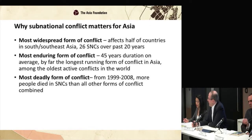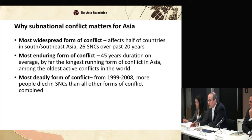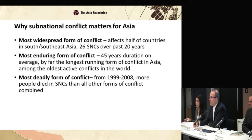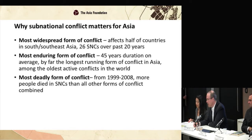Some of the key findings from the macro perspective across the region were quite striking. First, this is by far the most widespread form of armed conflict in Asia today, and has been for a long time — 26 conflicts in this region, affecting half of the countries. It's also the most enduring form of conflict. The average, by our estimate, is 45 years — one conflict on average lasts 45 years. And if we look at Burma, we see conflicts lasting 60-plus years.